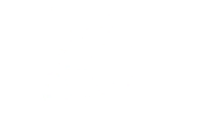Let's take a look at another one. Can you write the equation of a line that has a slope of negative 2, and a point on that line is negative 1, 5?